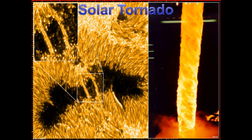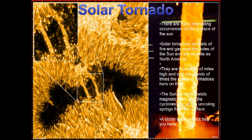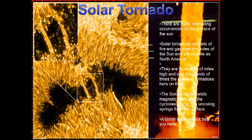For example, this one reads: There are many interesting occurrences on the surface of the sun. Solar tornadoes spin jets of fire and gas near the poles of the sun and are as wide as North America. They are thousands of miles high and spin thousands of times the speed of tornadoes here on Earth. The sun's rotation twists magnetic fields and cyclones pop up and they uncoil on the surface. A storm cellar will not help you here.